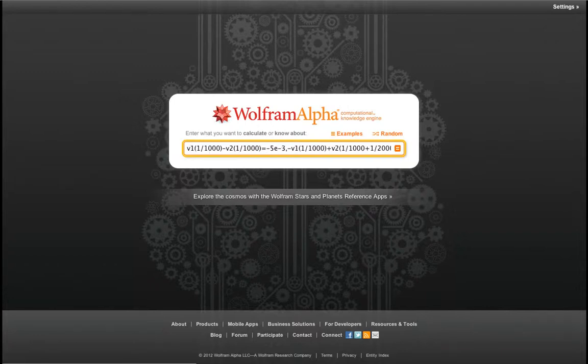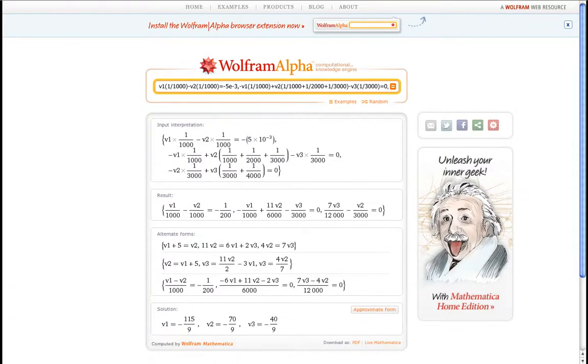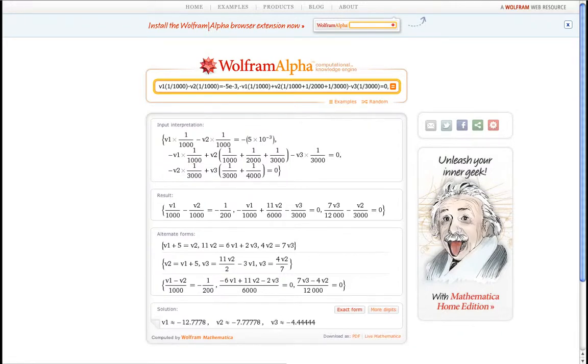So if I hit Enter, ask WolframAlpha to do the computation for me, it gives me several lines. Input interpretation, it gives me a result, it gives me a solution down here, and that's what I want. I'll click on the approximate form to get a numerical solution. And so what it tells me then is that V1 is minus 12.78 volts, V2 is minus 7.78 volts, and V3 is minus 4.44 volts.